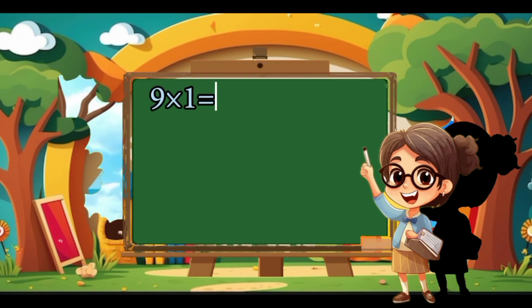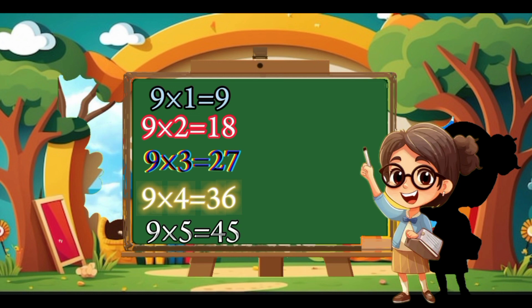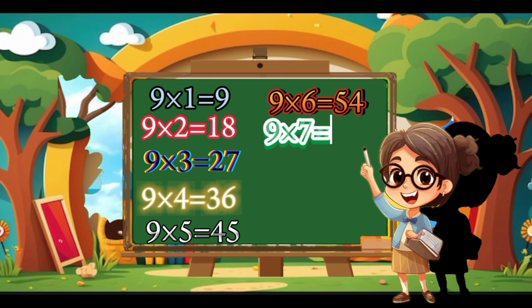9 1's are 9, 9 2's are 18, 9 3's are 27, 9 4's are 36, 9 5's are 45, 9 6's are 54, 9 7's are 63, 9 8's are 72.